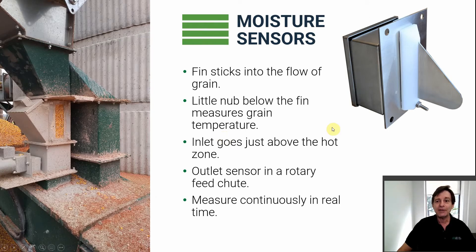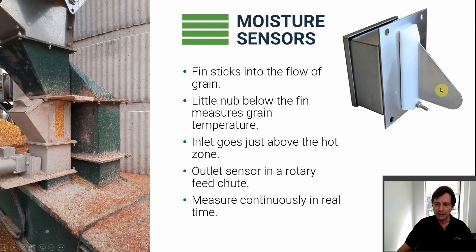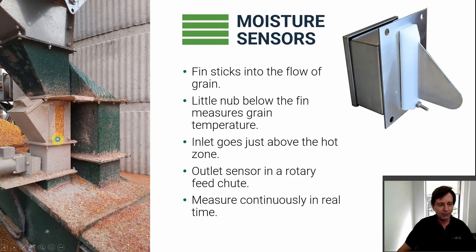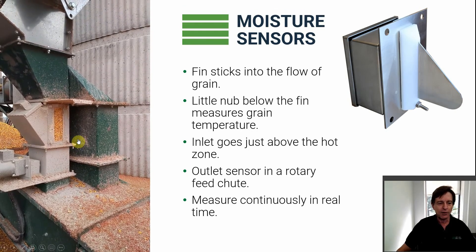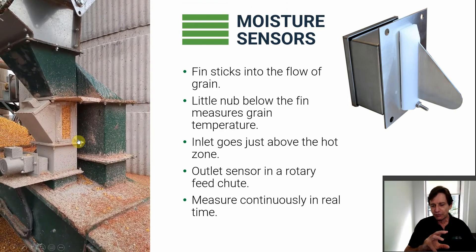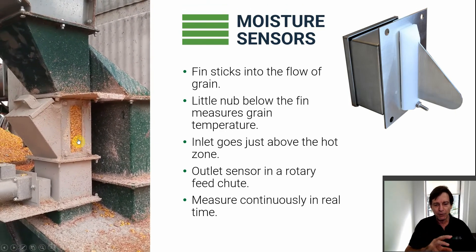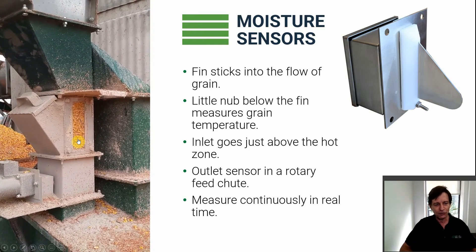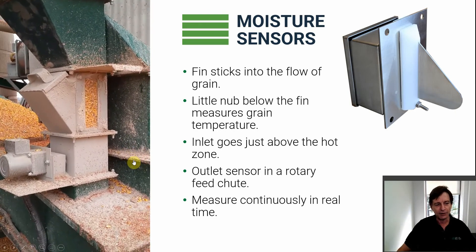One of the key things with Dryer Master is the moisture sensors — there are two, one at the inlet and one at the outlet. This is the moisture sensor; it's a fin type. The fin sticks into the flow of grain to measure moisture, and a little nub at the bottom measures grain temperature. At the outlet we put it into one of our rotary feed chutes. There are bypass versions and inline versions. About 40 to 50 bushels an hour goes through the chute; the rest goes over the side.